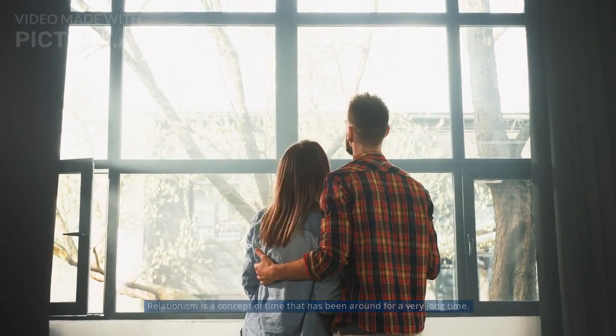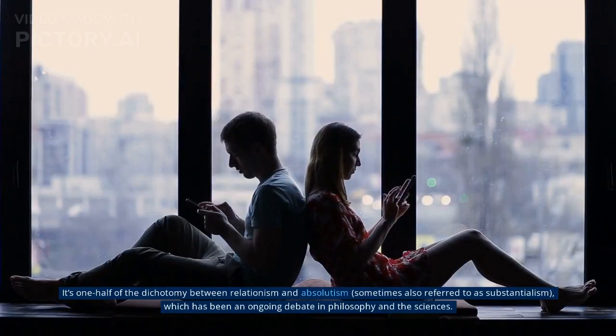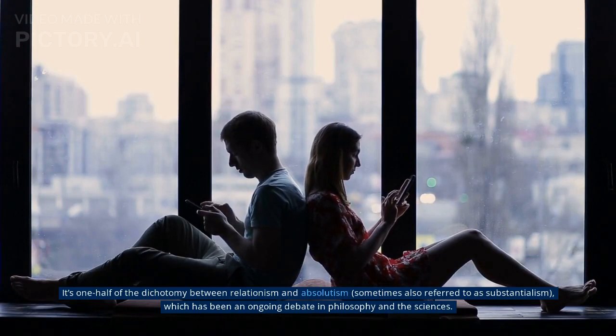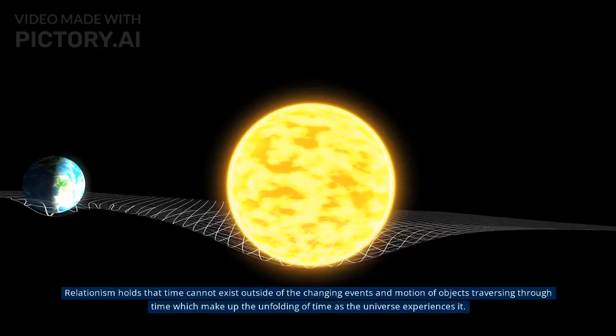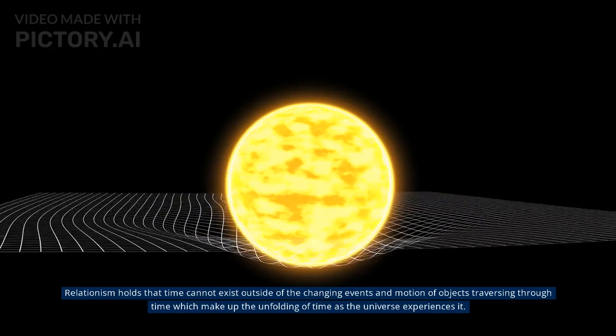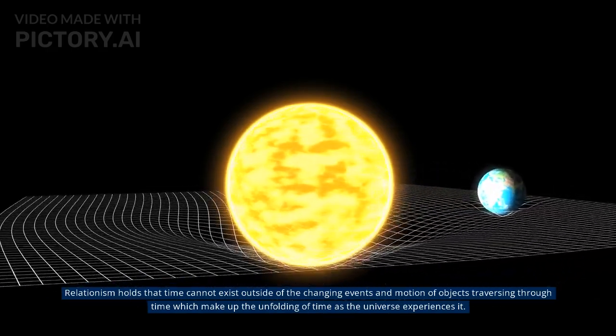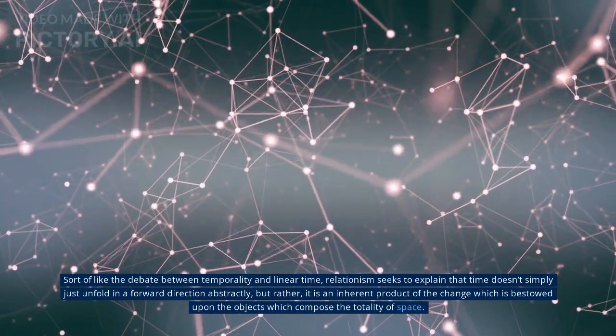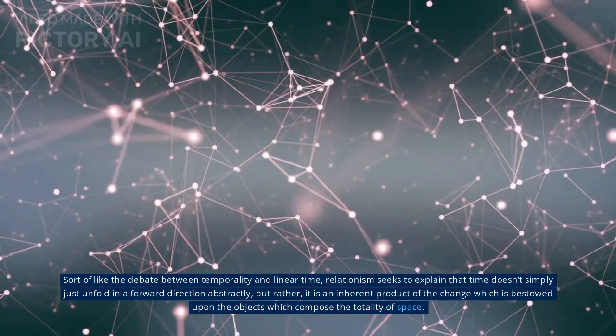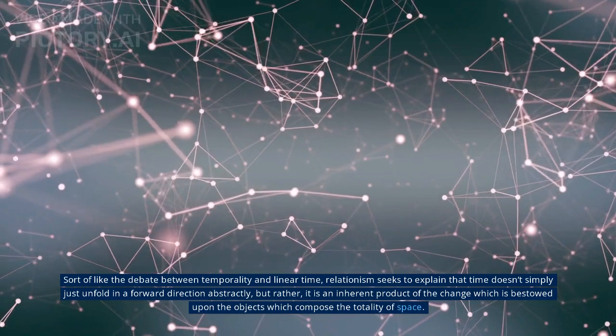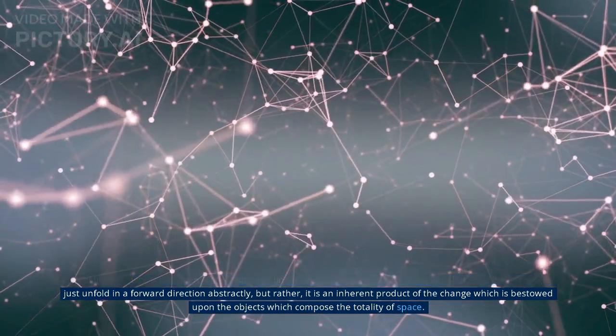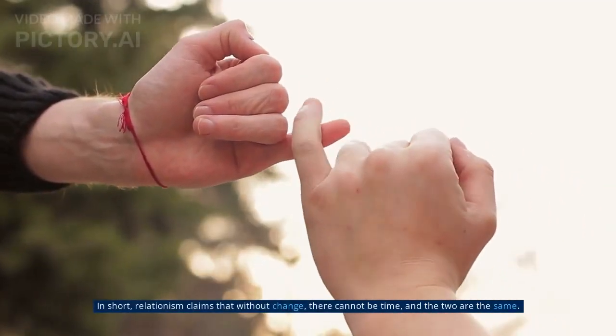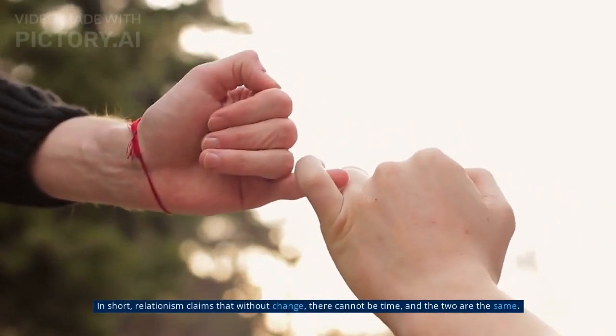Number 5: Relationism. Relationism is a concept of time that has been around for a very long time. It's one half of the dichotomy between relationism and absolutism, sometimes also referred to as substantialism, which has been an ongoing debate in philosophy and the sciences. Relationism holds that time cannot exist outside of the changing events and motion of objects traversing through time which make up the unfolding of time as the universe experiences it. Sort of like the debate between temporality and linear time, relationism seeks to explain that time doesn't simply just unfold in a forward direction abstractly, but rather, it is an inherent product of the change which is bestowed upon the objects which compose the totality of space. In short, relationism claims that without change, there cannot be time, and the two are the same.